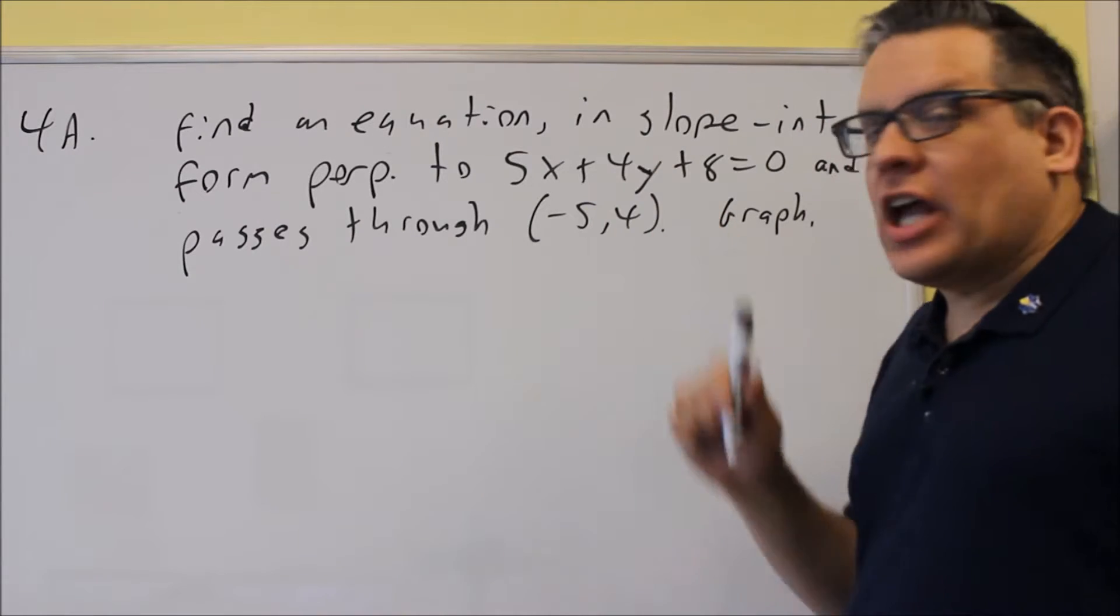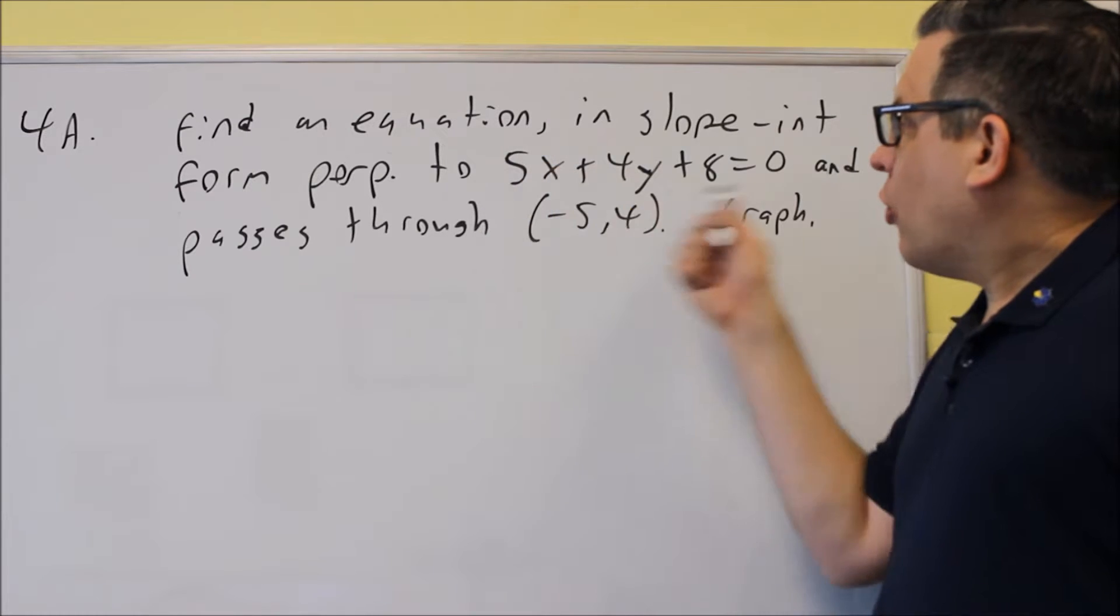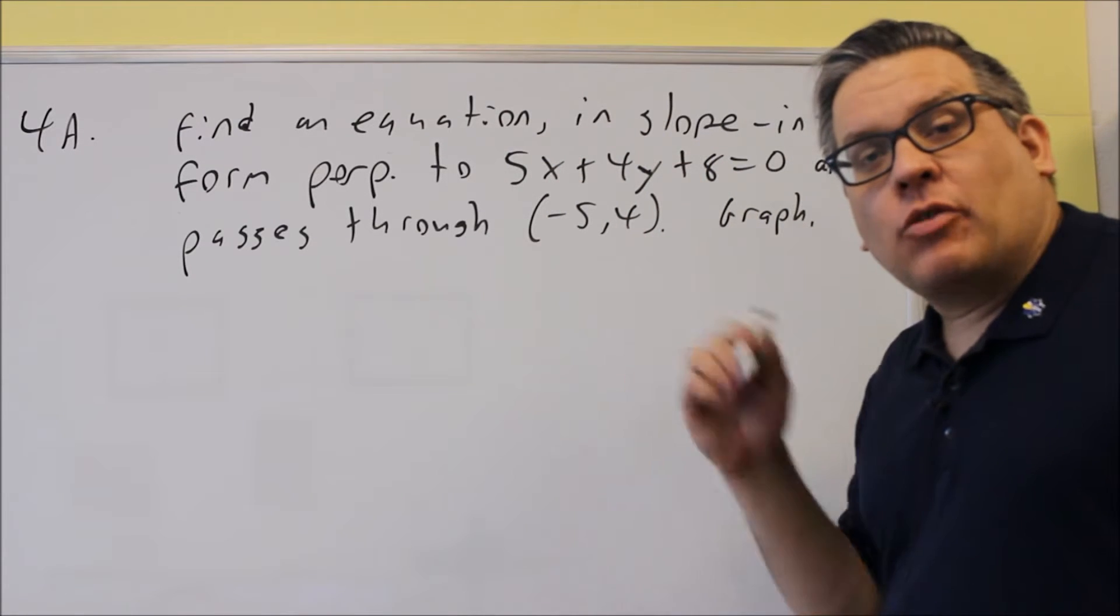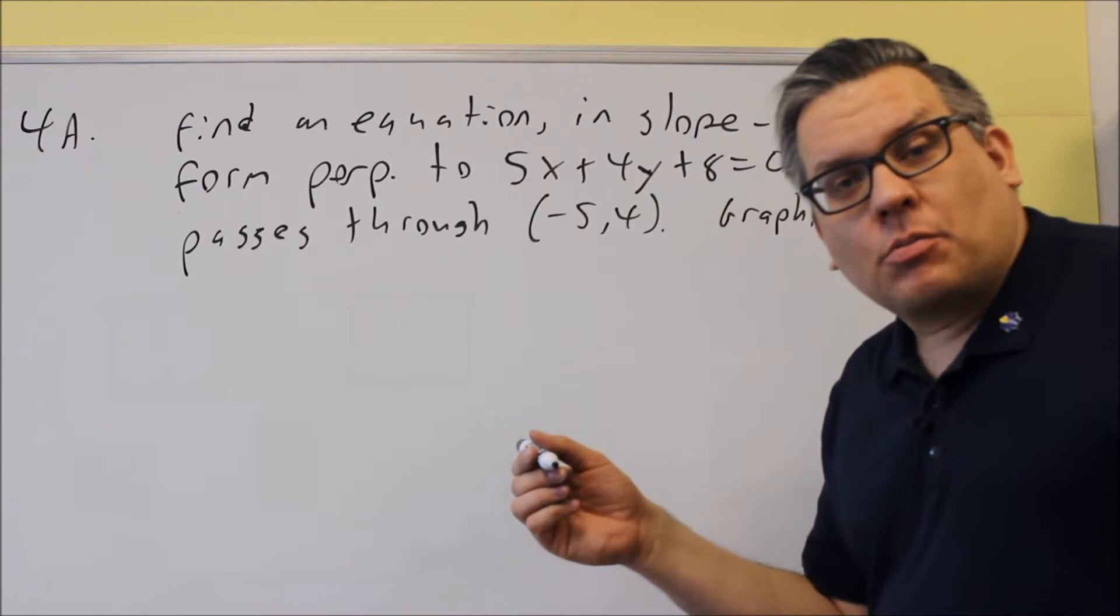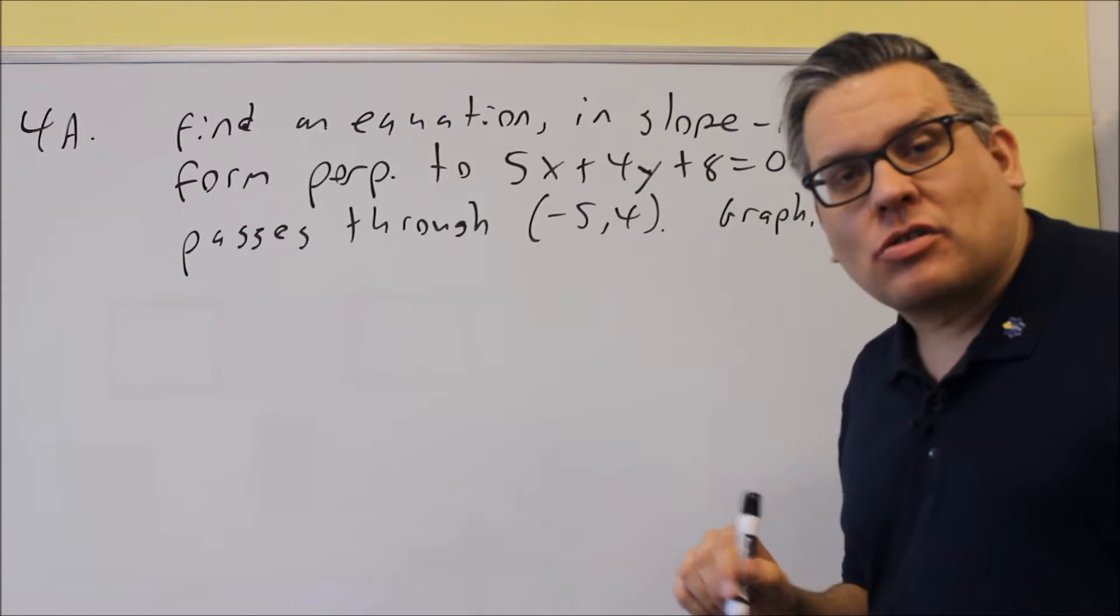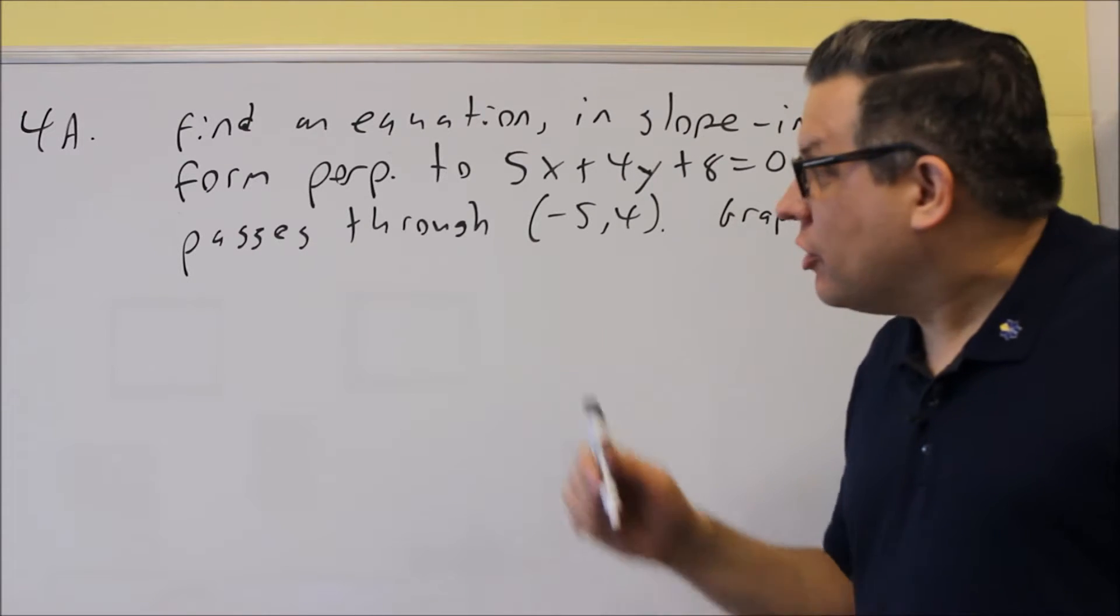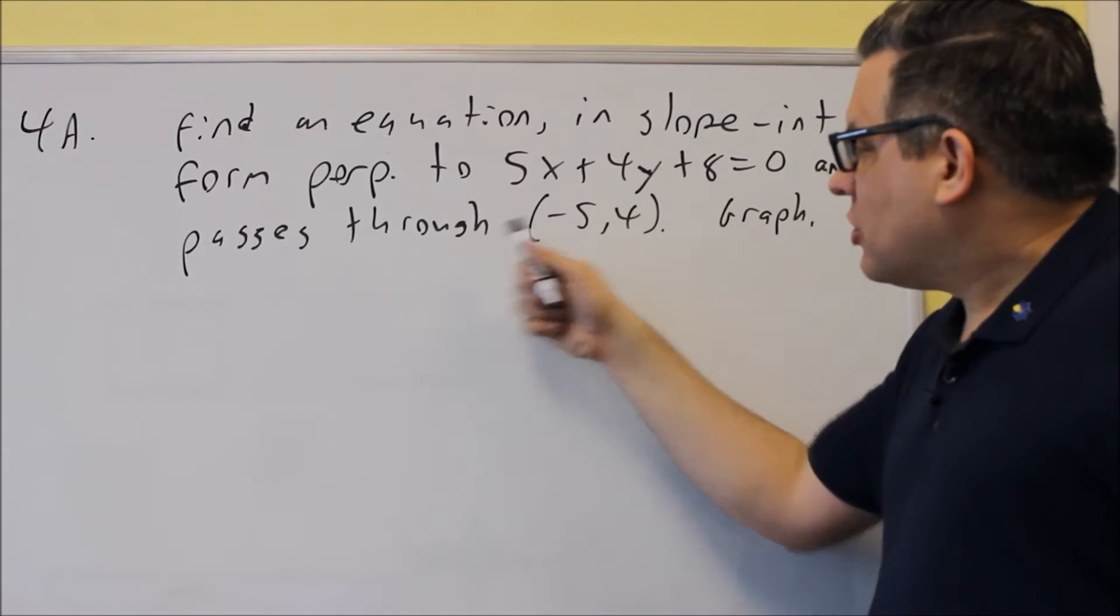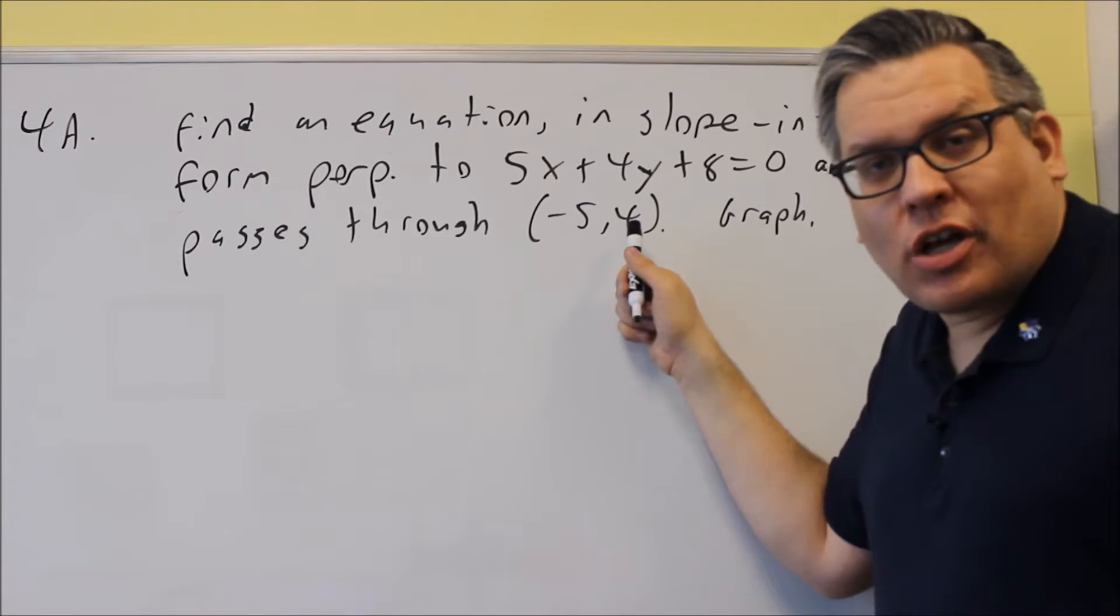So for this, first of all, what we have to do, we need to figure out what the slope of that original line is that they gave us, and we know that if two lines are perpendicular, they have opposite reciprocal slopes. So we're going to use that to figure out what actual slope that we need to get our answer for the line that goes through negative 5, 4.